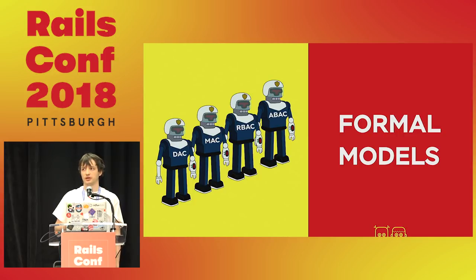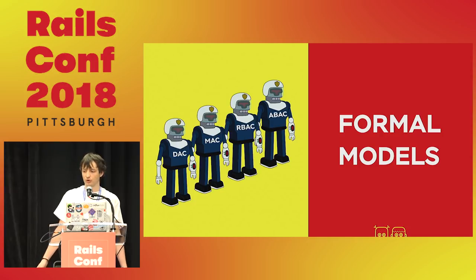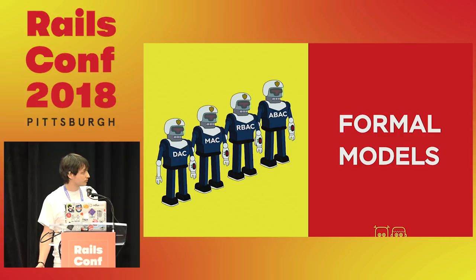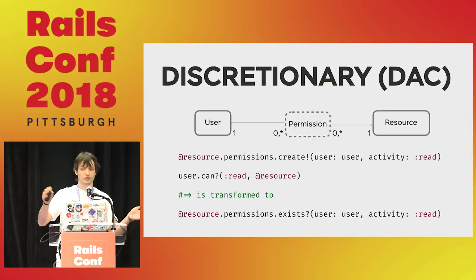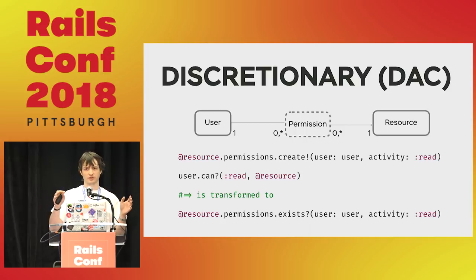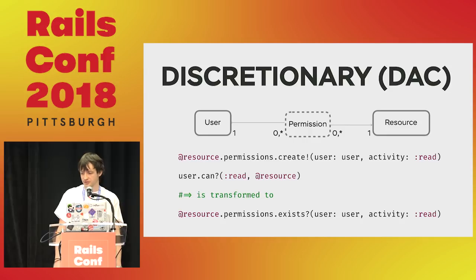In computer science there are some popular models to build access control business logic. The first one, the oldest one, is called Discretionary Access Control. It's pretty simple: we got users, we got resources, and if we want to grant access, we just create an intermediate model called a permission — just a record in the database which describes which activity a user is allowed to do with a resource. Authorization is just checking whether the record exists.